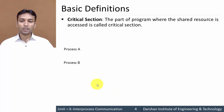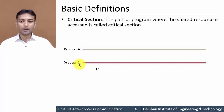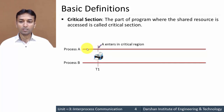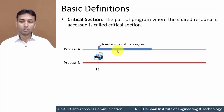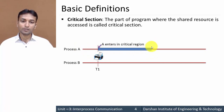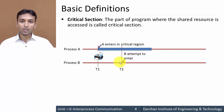Let's take an example. Suppose we have two processes, process A and process B. Now at a particular time T1, suppose process A starts to use the printer. This printer is a shared resource between process A and process B. At time T1, process A has started to use this printer, so process A enters the critical section. Suppose process A is using this printer up to a certain point, then process A will release this printer. So up to that point, process A is in the critical section. Now at time T2, process B tries to use this printer, meaning it attempts to enter the critical region.